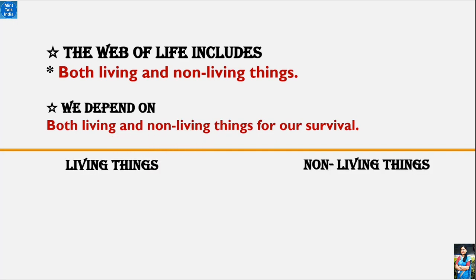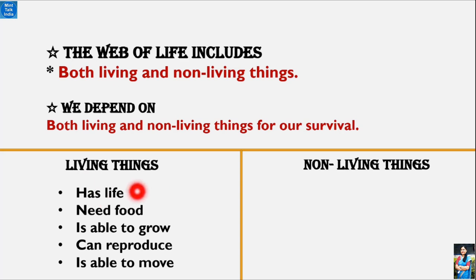Let's look into the characteristics of living things. What are the characteristics of living things? First is they have life. They need food. They grow. They reproduce. Living things are able to move.